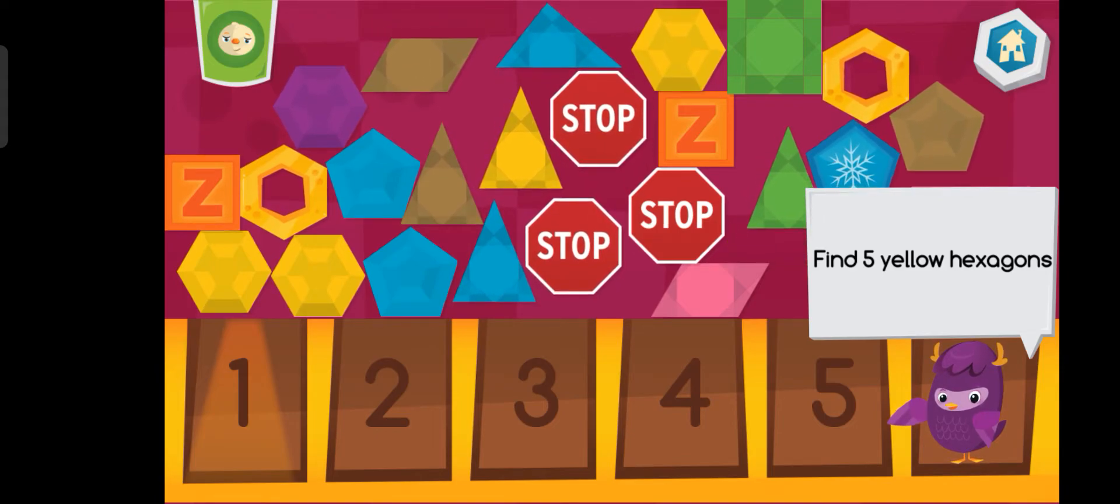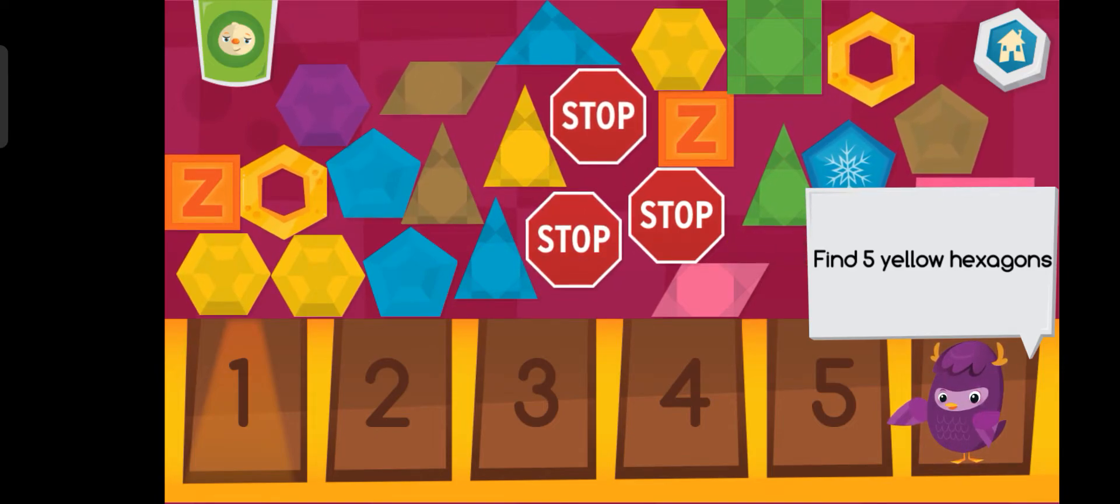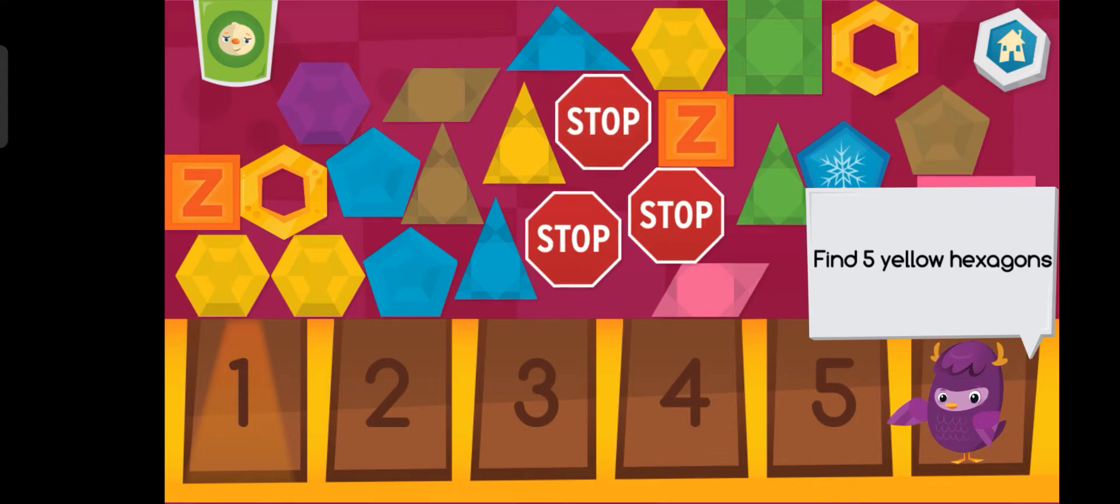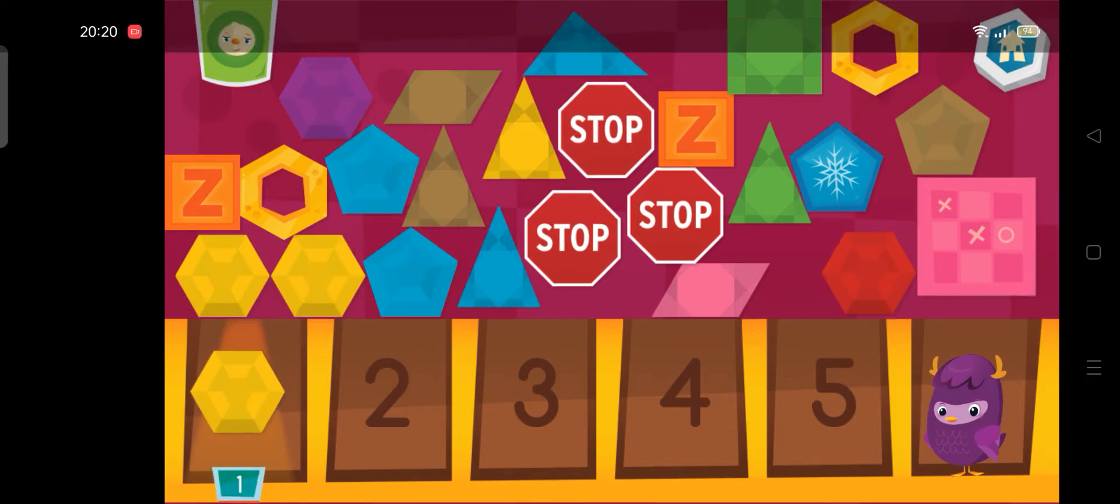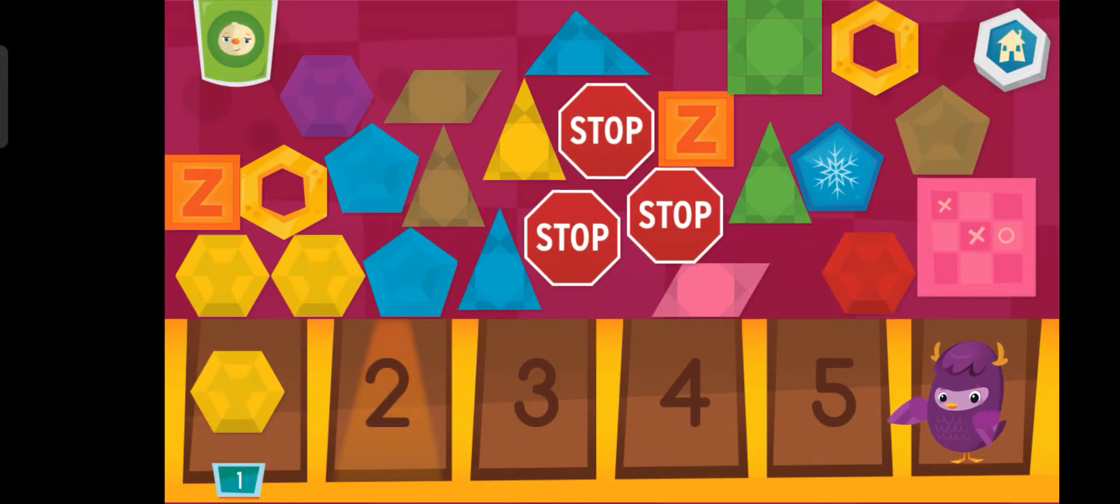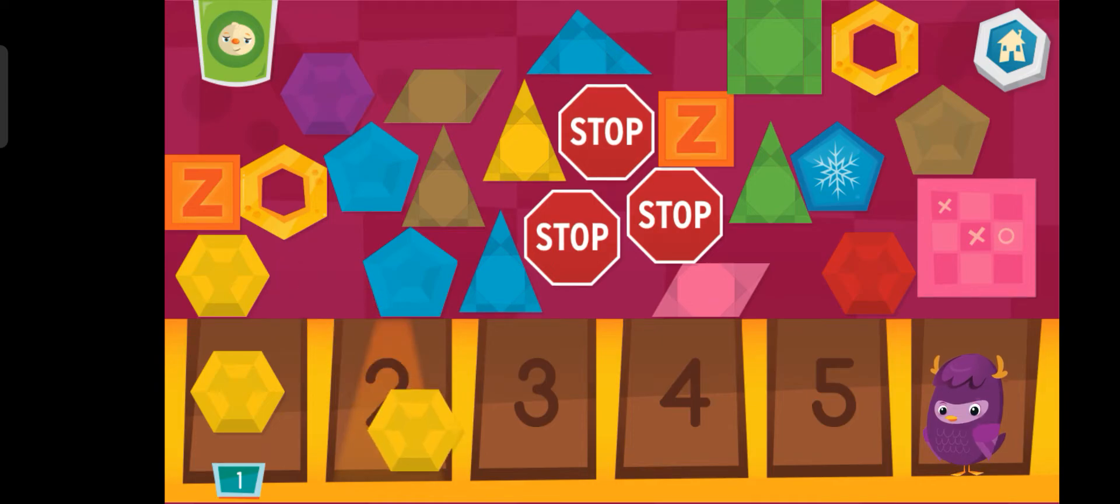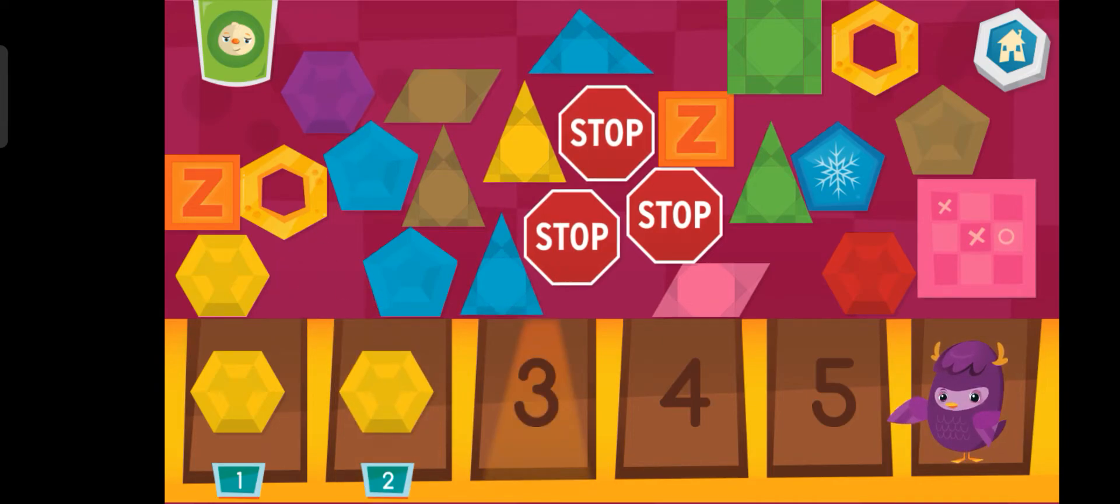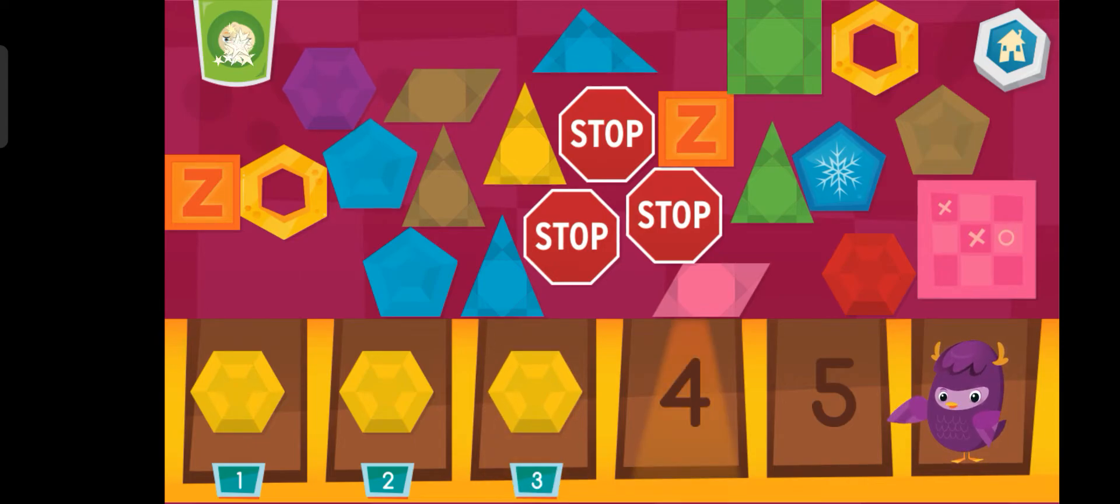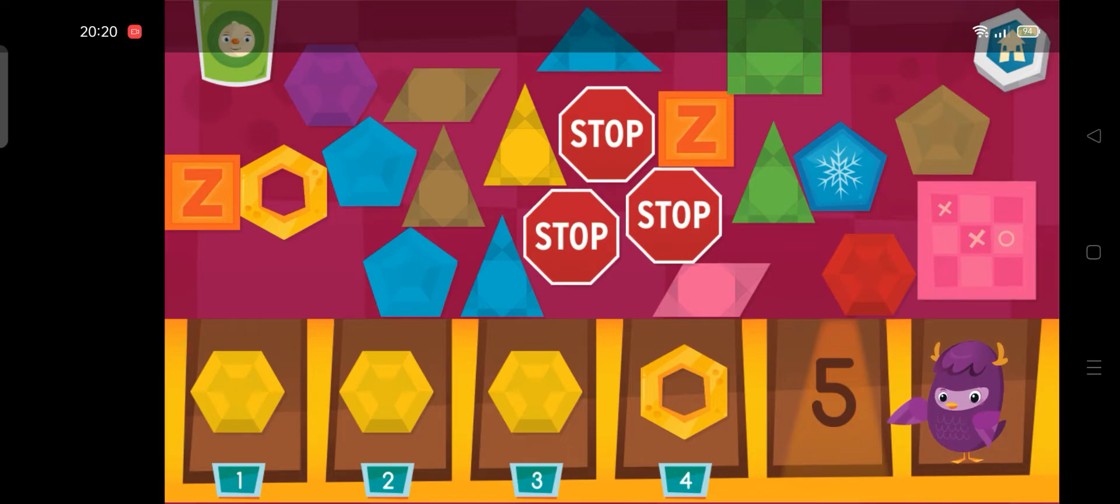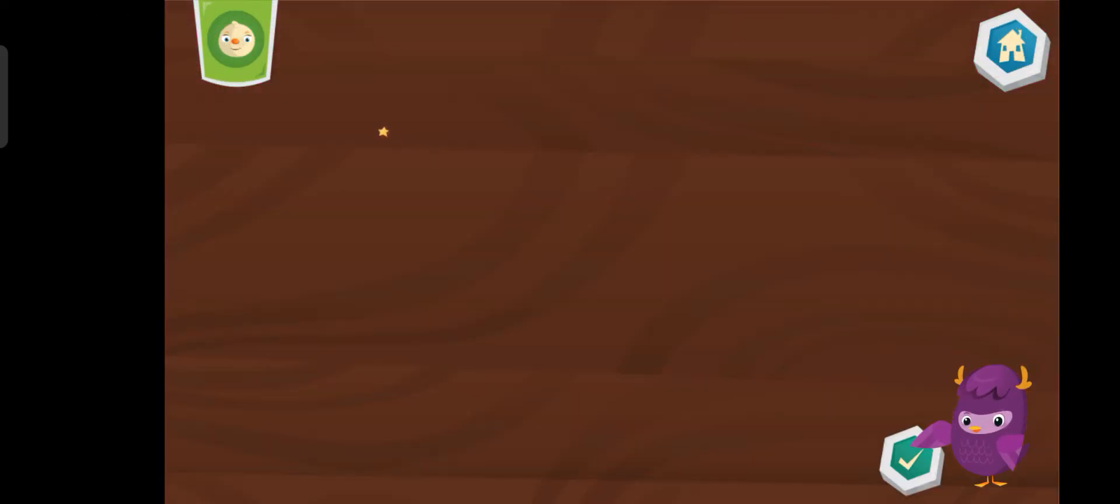Let's look for five yellow hexagons. One. Two. Three. Three. Four. Five!